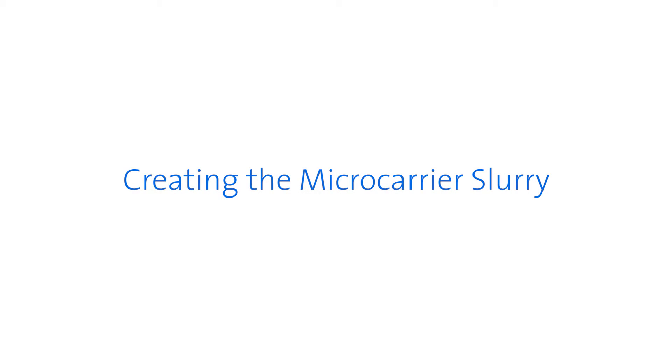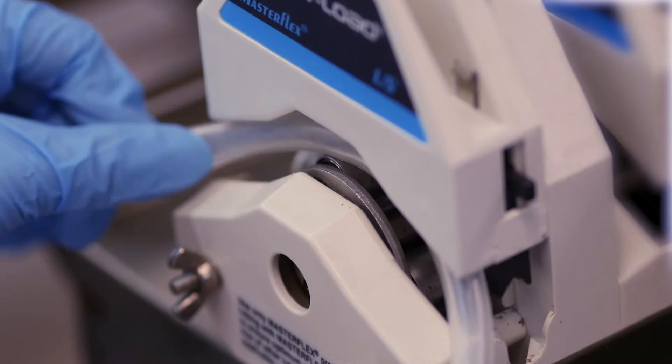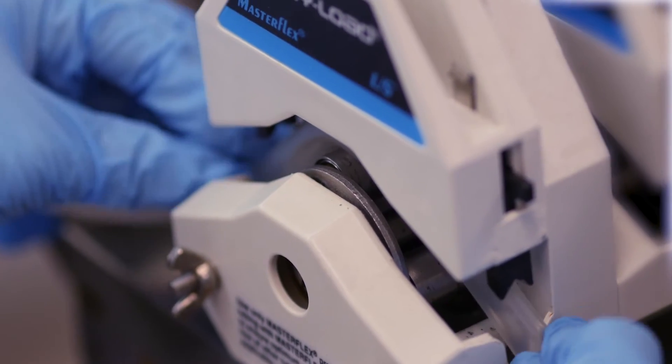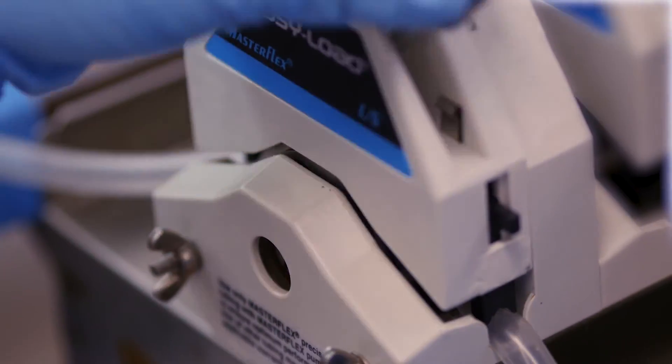There are three methods for generating a slurry. You can connect the inlet tube on the aseptic cap to a peristaltic pump and transfer liquid into the microcarrier bottle.